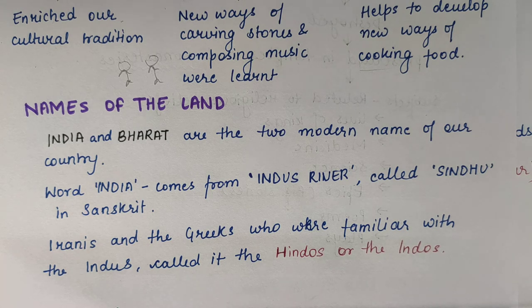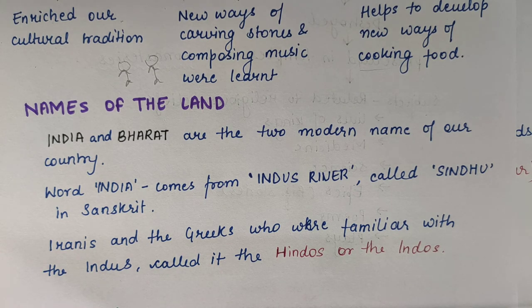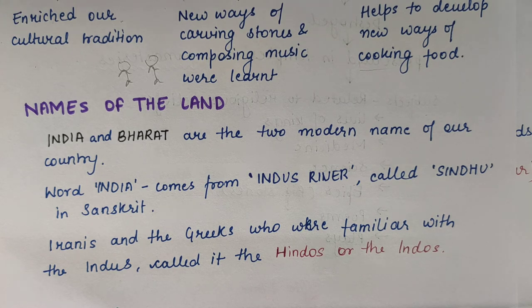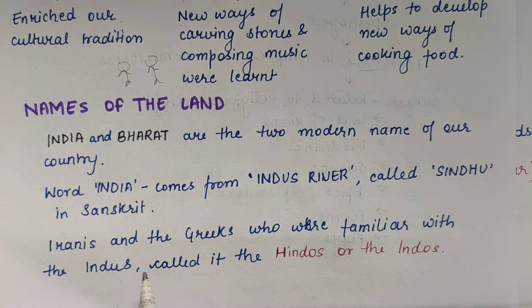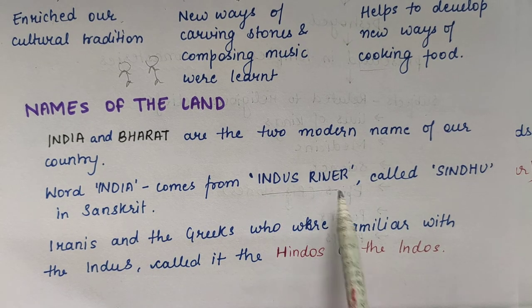Now, the name of the land. How does our Indian name come about? Basically, for our country we use two names — India in English and Bharat in Hindi. These are the modern names of our country. The word 'India' is from the river Indus — Indus River, which we have seen on the map, that is in Pakistan.